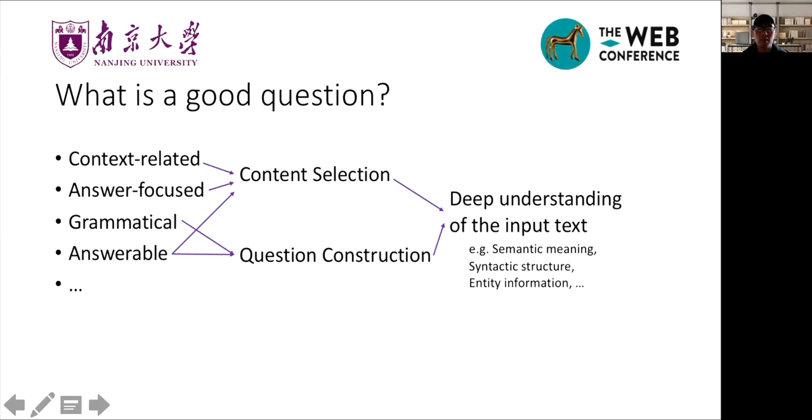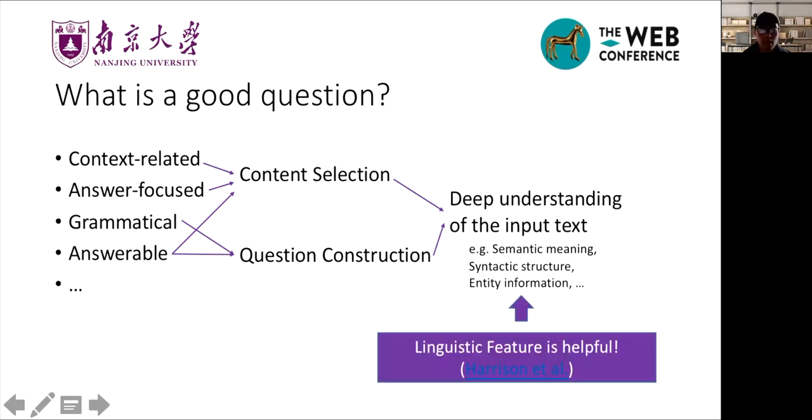So to achieve these things, model needs to know how to select proper content and how to construct questions. And all these things are based on deep understanding of inputs, including understanding the input's semantic meaning and the syntactic structure or entity information. Experiments prove that with linguistic features, QG models can obtain better performance.